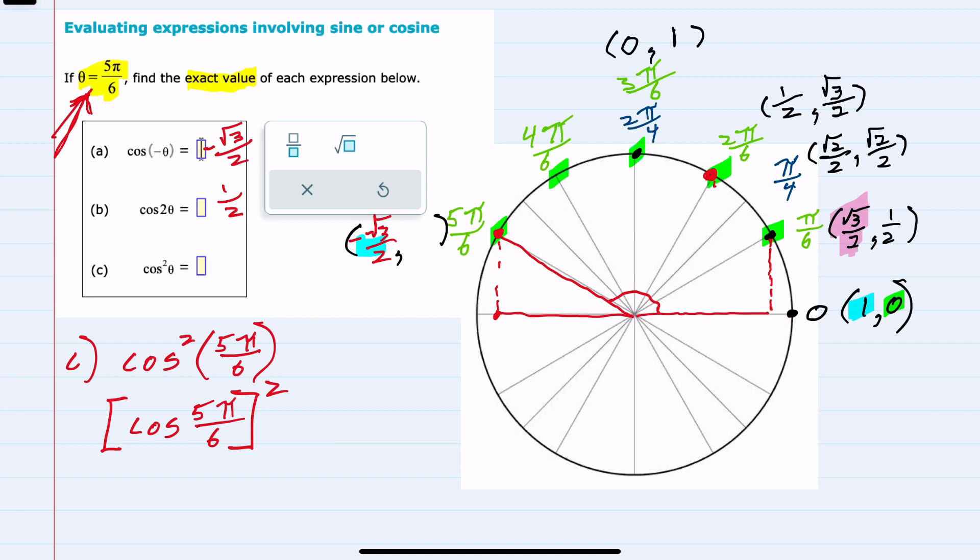The same distance, just in the opposite direction. But this is the cosine value. And since we're looking for the cosine squared, we would want to square the negative square root of 3 over 2.